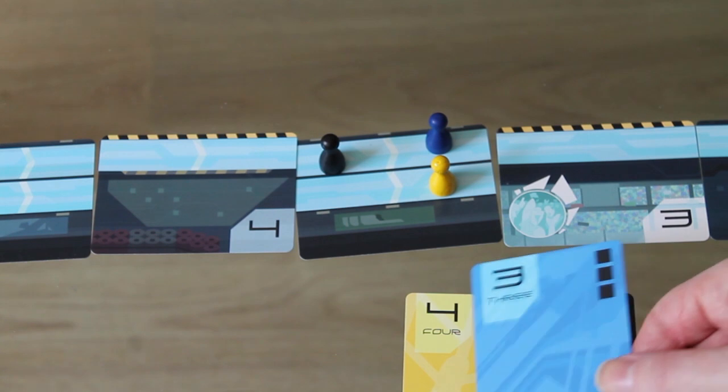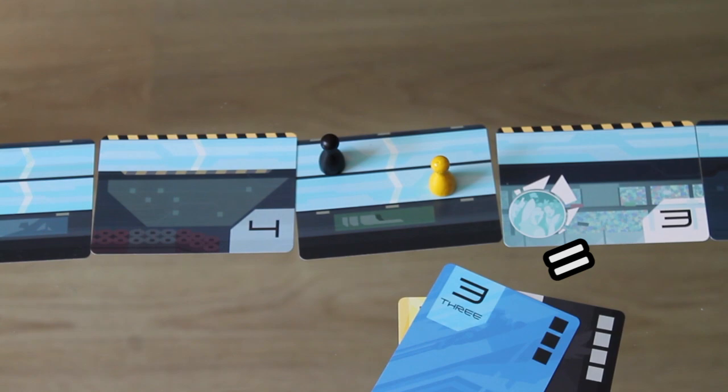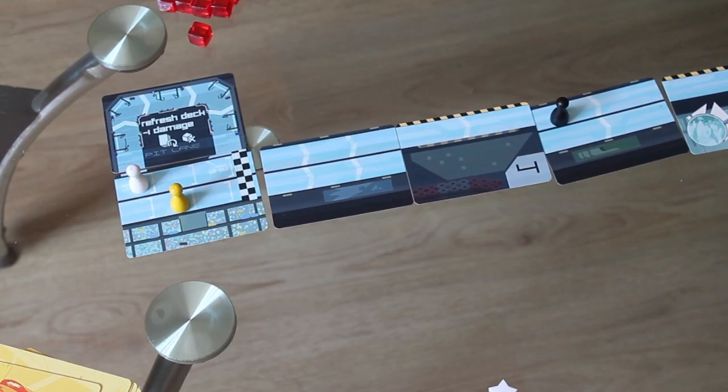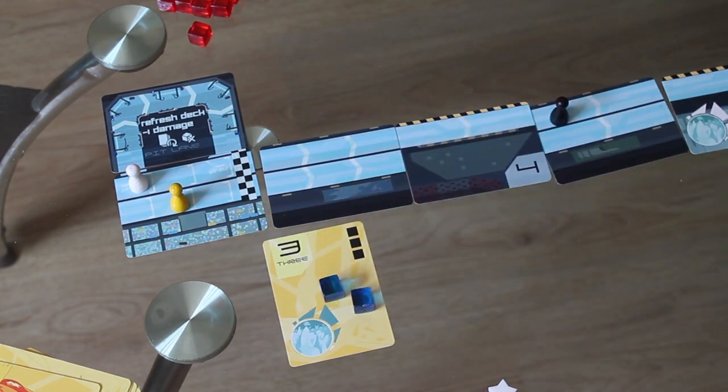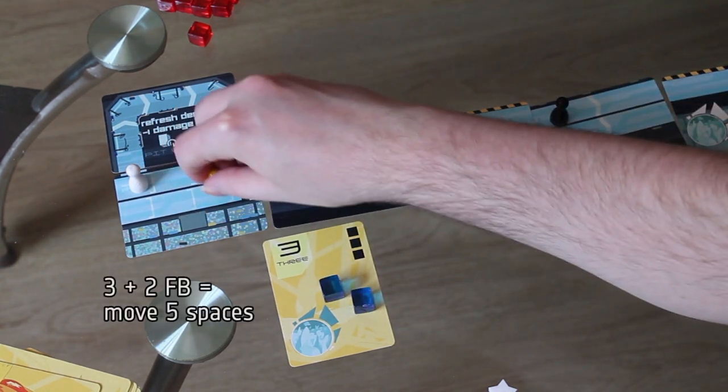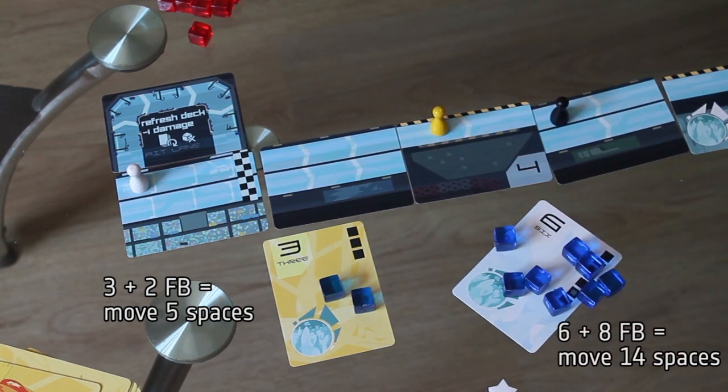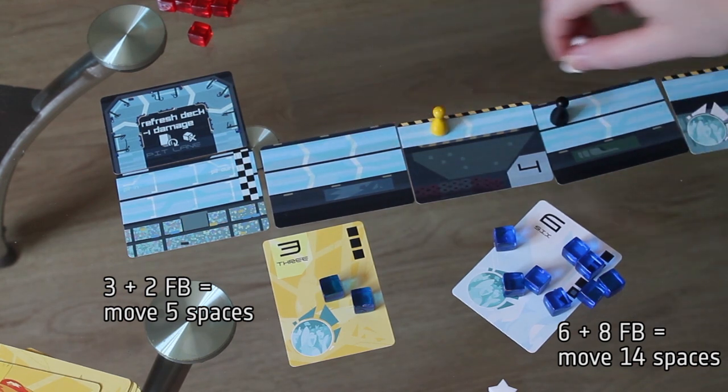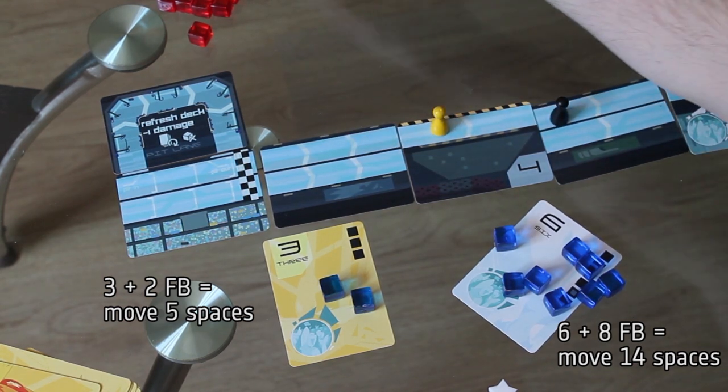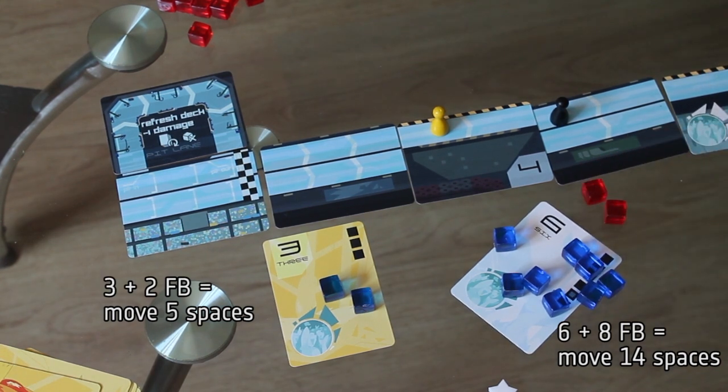You can also earn fan boost when you go through a stadium corner at exactly the speed listed. Fan boost can be spent for extra speed. When you play a card with the fan boost symbol on it, you can spend any of your fan boost to go one extra space per cube. You can spend as much as you like doing this. One thing I should mention is that when you're taking damage from corners, you always use your actual distance traveled. So you can use traffic to slow yourself down, or if you're dumping a ton of fan boost to blast all the way down the track, you're probably taking damage from every single corner you pass.